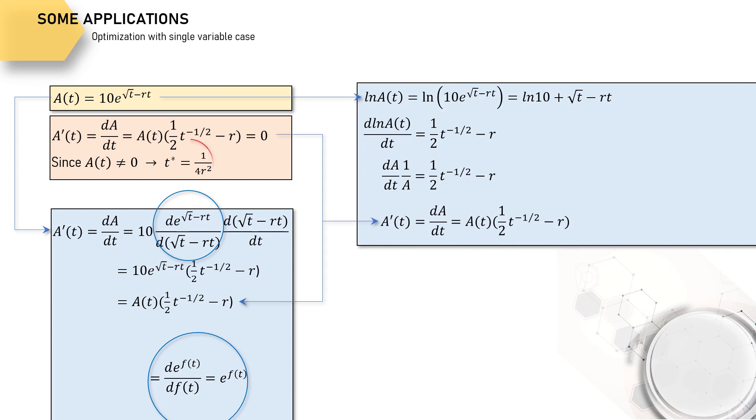Now, how to find the T*? Quite simple, since A(T) cannot be 0, so the only way to make the first derivative equal 0 is by omitting A and concerns only to the expression inside the parenthesis. By a little modification, then we can come up with the T* expressed like this.